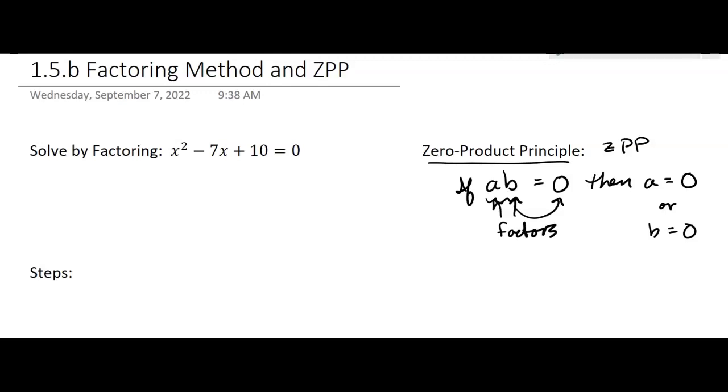Okay, that's the zero product principle. So the only way to get zero in multiplication is to have one of the factors be zero. Okay, so now that leads us to solving by factoring.